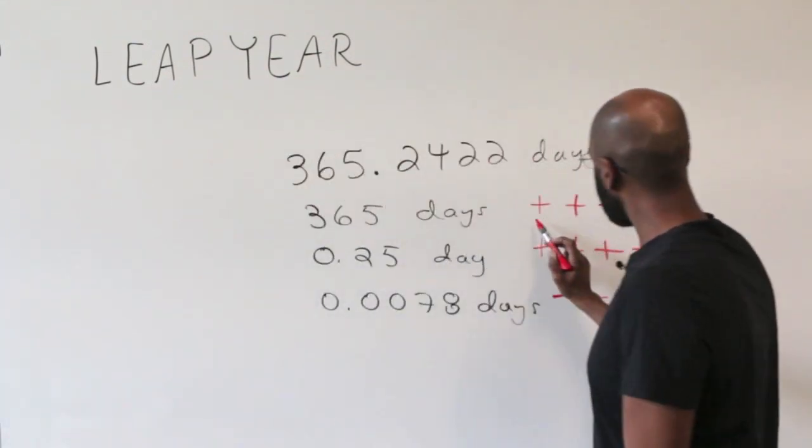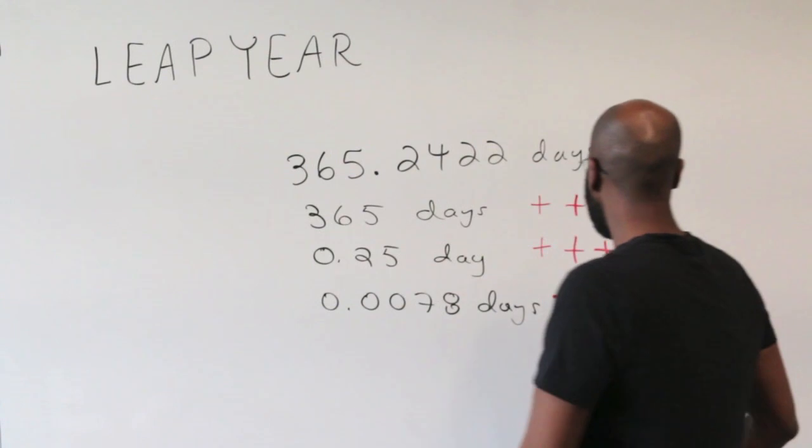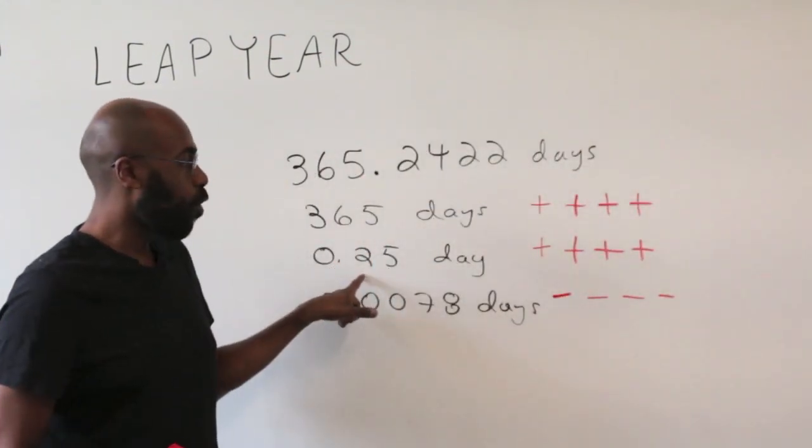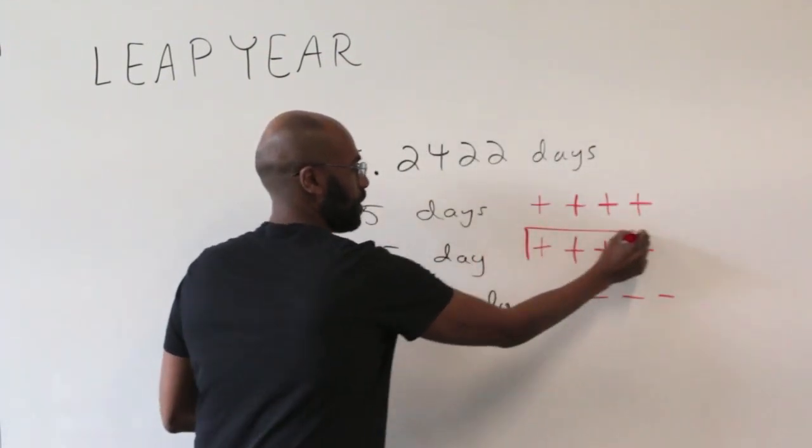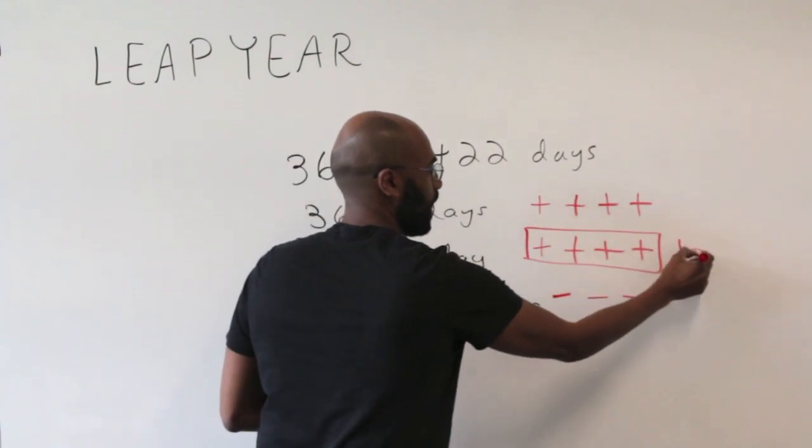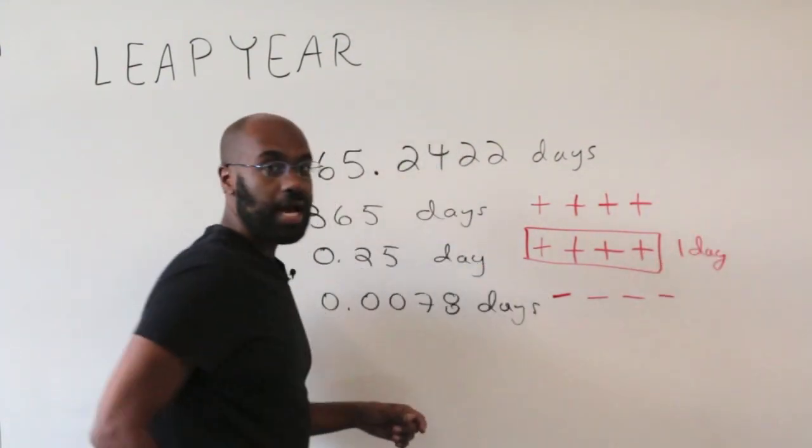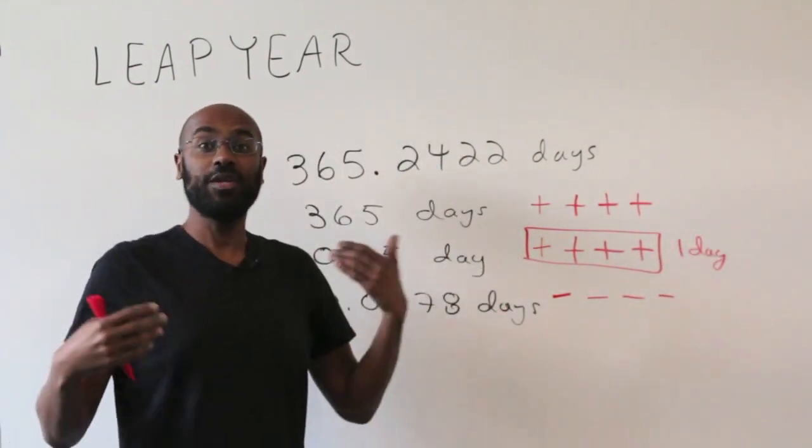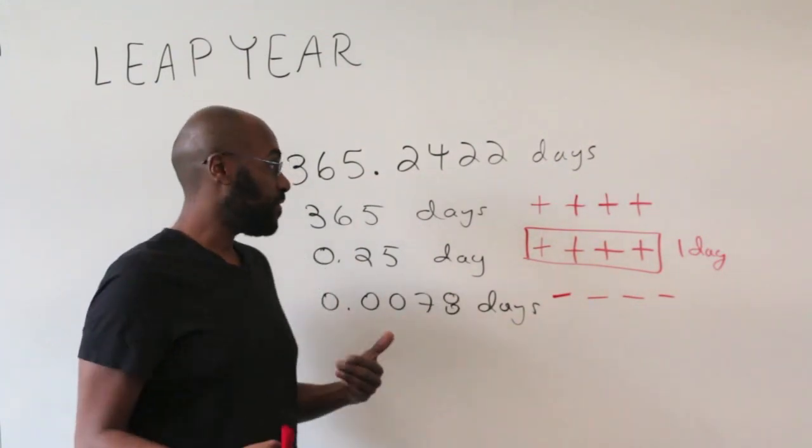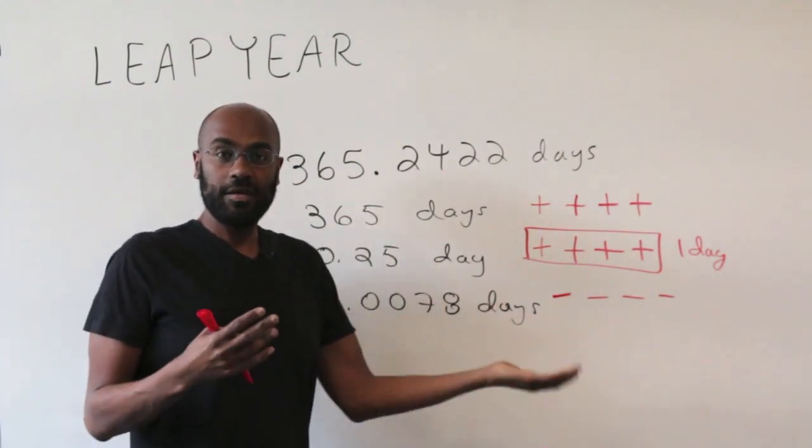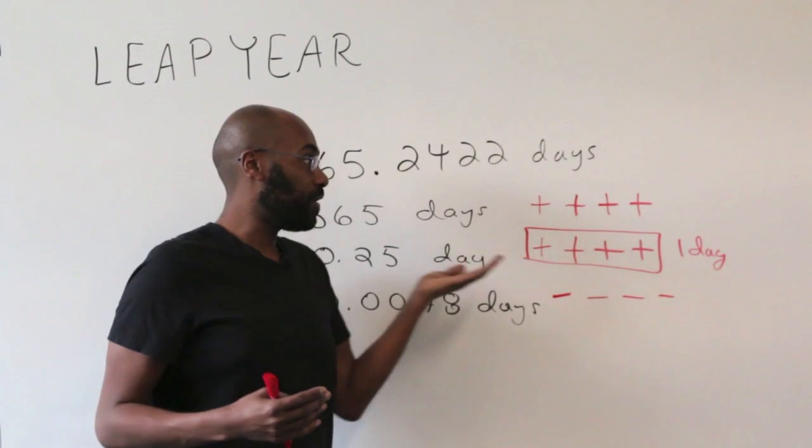we get our typical year that we're used to. And then we get four quarters of a day extra, giving us an extra one day every four years. And that's our lovely leap year that we know and love. And so we think, oh, then every four years, we're going to get one of these leap years.